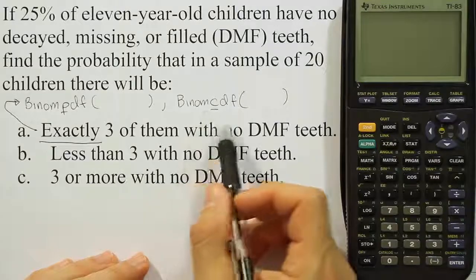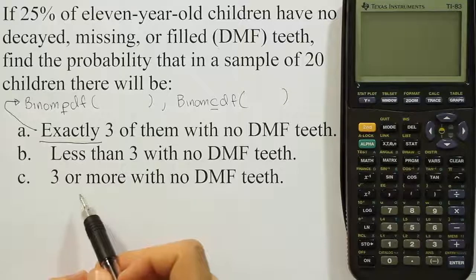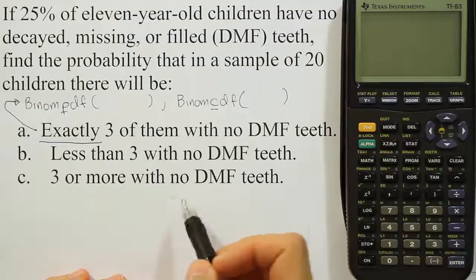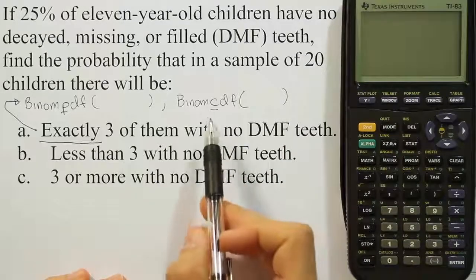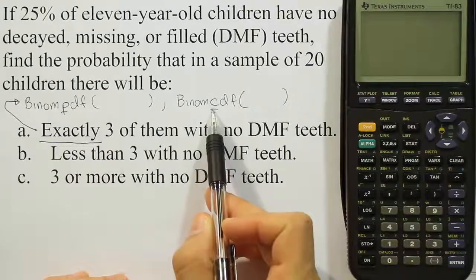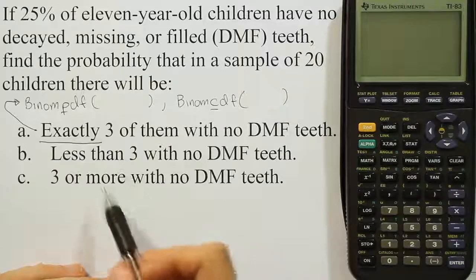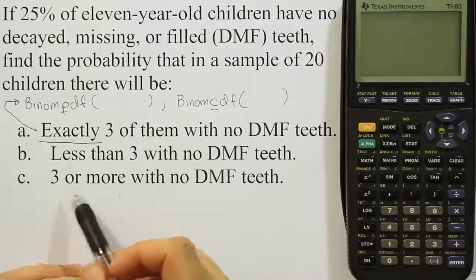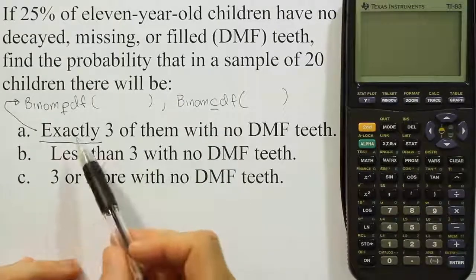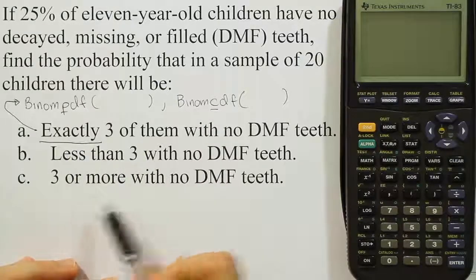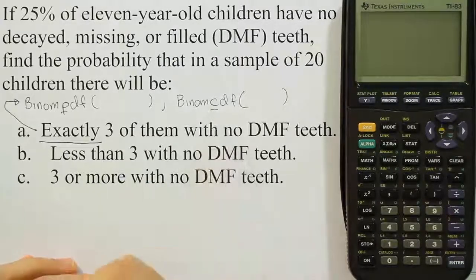And then we have three or more, and three or more is going to be three, four, five, six, all the way up to 20, the full sample having no DMF teeth. And that'll be binomial CDF because it's the cumulative density function. So that's the distinction. If it says exactly, you use the PDF. If it says less than three, more than three, at least three, it would be CDF. Anytime you're going to be adding more than one case together, it's going to be binomial CDF.